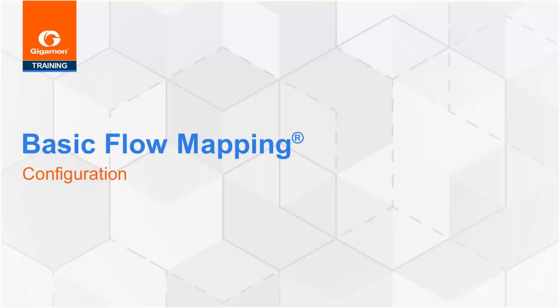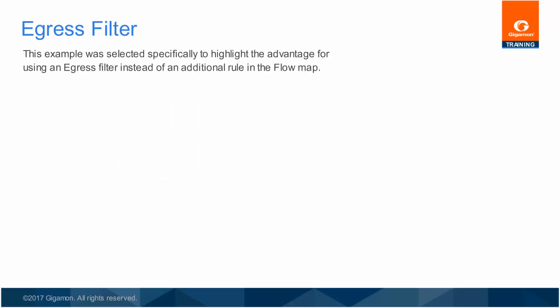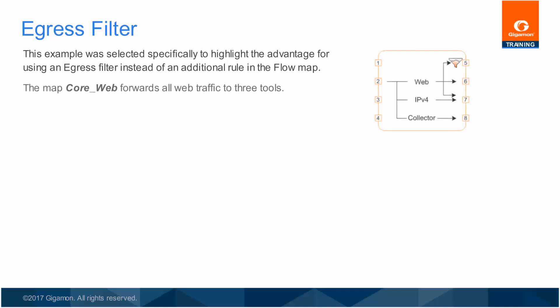Welcome to the Basic Flow Mapping module. The next example illustrates how to limit a shared traffic stream so that one port experiences a reduced traffic set compared to others receiving copies of the same traffic. For this example, assume that the tool attached to port 5 is managed by staff who maintain only the intranet servers, while tool number 2 is managed by staff who provide security for both intranet and internet web servers, so they need all web traffic. The map named forwards all port 80 web traffic found on the network core uplink to three tool ports.